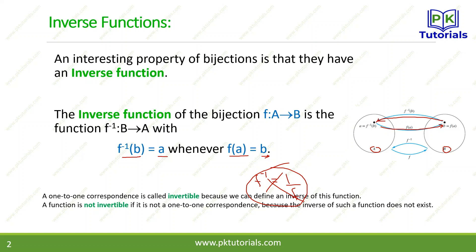One-to-one correspondence is called invertible. A function is not invertible if it's not one-to-one correspondence. There is no such function that has an inverse function if it is not one-to-one.